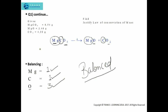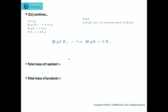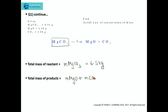Now we can apply the Law of Conservation of Mass: total mass of reactants equals total mass of products. Let us calculate the total mass of the reactants as well as the products. Here we just have one reactant, magnesium carbonate, with a mass of 6.54 grams. We have two products, so the total mass of the products will be mass of magnesium oxide plus mass of carbon dioxide, which is 2.46 grams plus 4.08 grams.